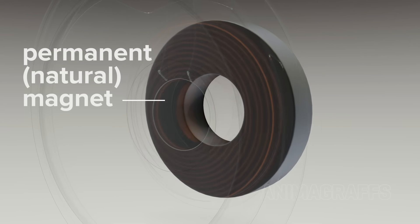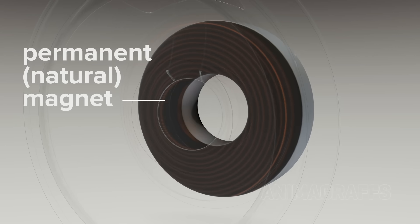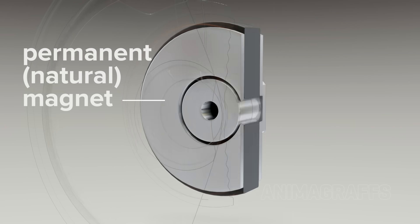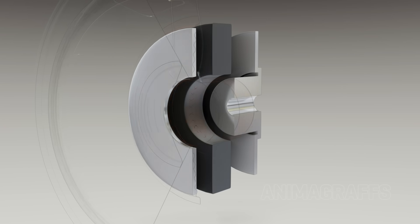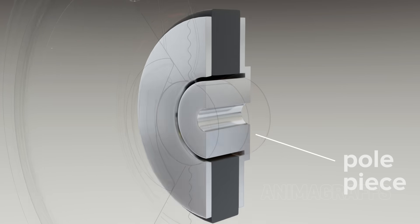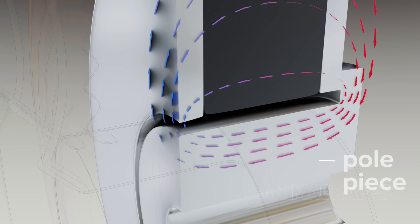A large permanent magnet or natural magnet surrounds the voice coil. This magnet has a top plate and a backing plate with a pull piece through the center to focus the magnet's field through the gap.